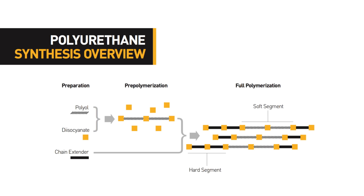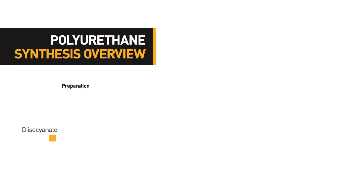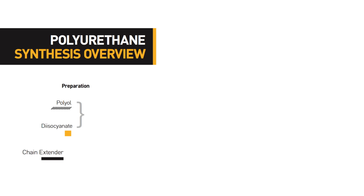Polyurethanes can be synthesized by many routes, but the most common synthetic scheme for medical polyurethanes, shown here, is called the pre-polymerization method. Urethane linkages are formed by reacting an isocyanate with a hydroxyl group. In polyurethanes, the isocyanate group comes from the lower molecular weight diisocyanates, while the hydroxyl group comes from two sources: the polyol and the chain extender.